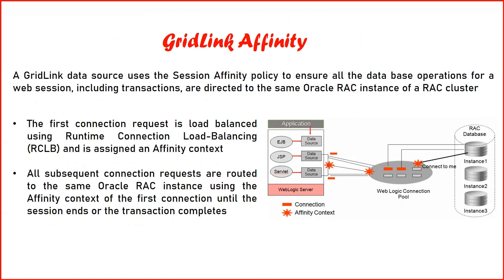The third property is grid link affinity. A grid link data source uses a session affinity policy to ensure all database operations for a web session — including transactions — are directed to the same Oracle RAC instance. This is similar to session affinity in your WebLogic server, which you can achieve with a load balancer: once a user connects to a backend managed server, every request from that user goes to that same backend application server. This increases the performance of web applications, especially when performing transactions on e-commerce or banking websites.